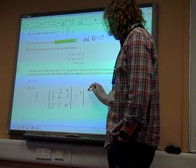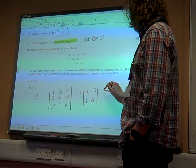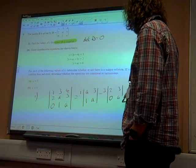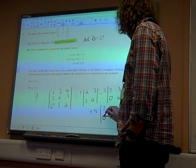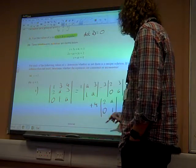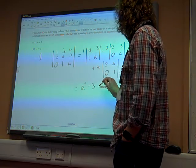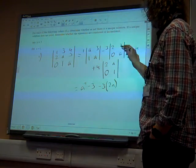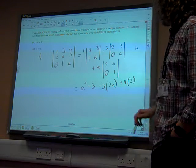Which would be 1 times A, 3, 1, A, minus 3 times 2, 3, 0, A, plus 4 times 2, A, 0, 1, which gives me A squared minus 3, minus 3, minus 3 times 2A, minus 0, plus 4 times 2, minus 0.